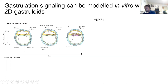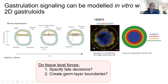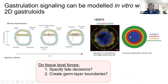We can model gastrulation using micropatterning. When we add the morphogen BMP4 to the culture medium, three markers corresponding to the three germ layers—ectoderm, mesoderm, and endoderm—form in a very characteristic pattern. We use this as a model of the signaling pathways involved in gastrulation, and we're particularly interested in mesoderm and how mechanical forces regulate fate decisions and create boundaries between these three germ layers.